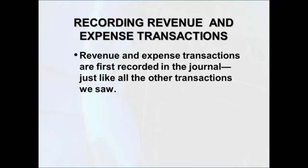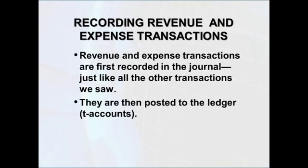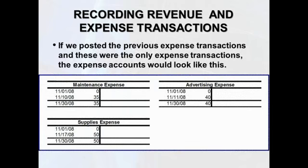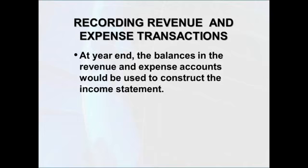Revenue and expense transactions, like other transactions, are first recorded in the journal and then posted to the ledger or T-account. If we posted the previous revenue transactions and these were the only revenues for the period, the revenue account would show a beginning balance of zero, with $45 added on November 2nd, $65 the next day, and $35 on November 8th — giving an ending balance of $145. The expense accounts would show $35 in maintenance expense, $50 in supplies expense, and $40 in advertising expense. At the end of the fiscal period, we'd use these balances to construct the income statement.